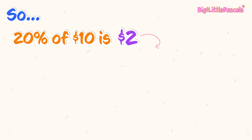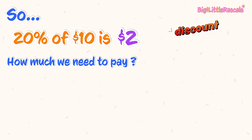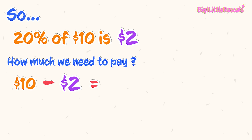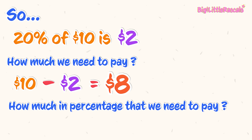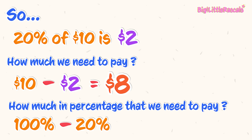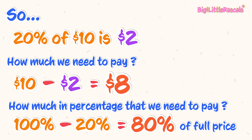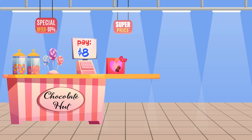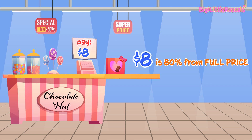That means the discount is $2. So how much do we need to pay? $10 deducted by $2 equals $8. So after the discount, we need to pay $8. In another way, we only pay 100% minus 20%, which equals 80% of the full price. We pay $8 for the chocolate box, and $8 is 80% of $10.